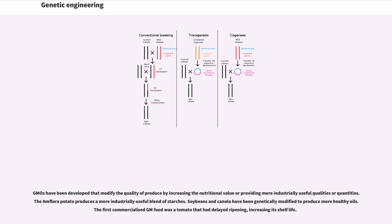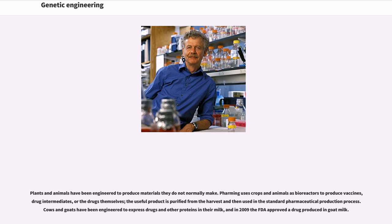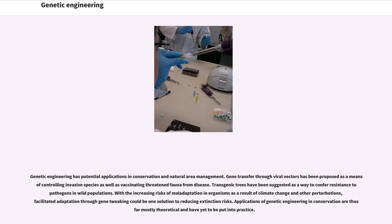GMO plants and animals have been engineered to produce materials they do not normally make. Farming uses crops and animals as bioreactors to produce vaccines, drug intermediates, or the drugs themselves. The useful product is purified from the harvest and then used in the standard pharmaceutical production process. Cows and goats have been engineered to express drugs and other proteins in their milk, and in 2009 the FDA approved a drug produced in goat milk. Genetic engineering has potential applications in conservation and natural area management. Gene transfer through viral vectors has been proposed as a means of controlling invasive species as well as vaccinating threatened fauna from disease. Transgenic trees have been suggested as a way to confer resistance to pathogens in wild populations. Facilitated adaptation through gene tweaking could be one solution to reducing extinction risks. Applications of genetic engineering in conservation are thus far mostly theoretical and have yet to be put into practice.